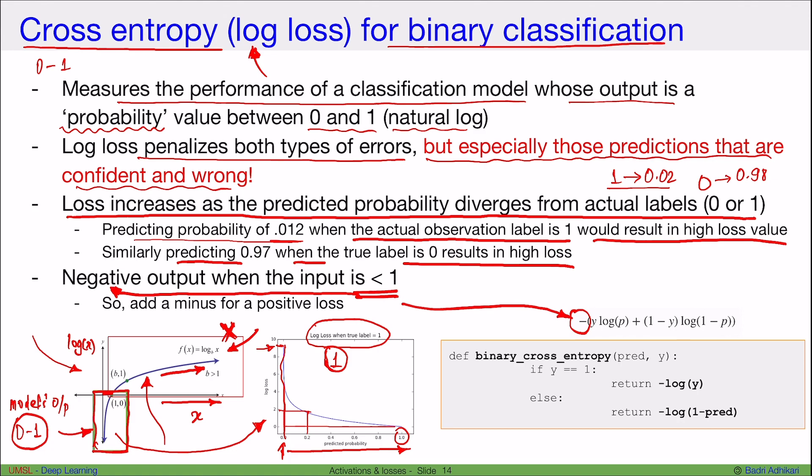So the basic idea behind here's the implementation of the binary cross-entropy loss. It simply takes two values: predicted value and the correct label. So y can be either 0 or 1, and the prediction value can be between 0 and 1, a continuous value between 0 and 1. If y is 1, we want to return negative log of the input predicted probability. This actually should be negative log of p, negative log of prediction.